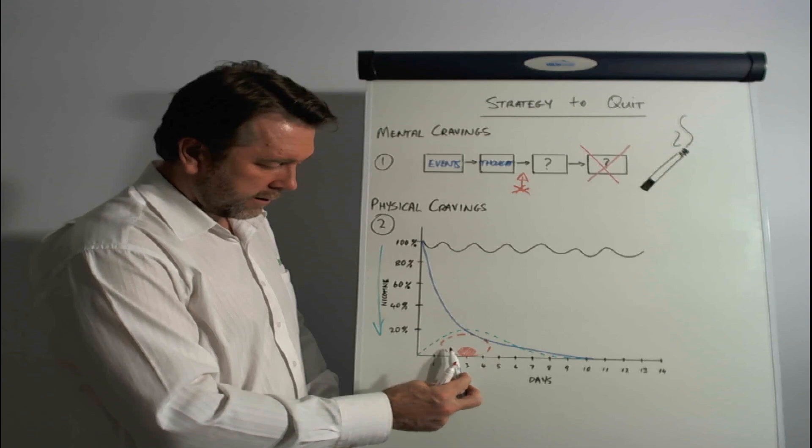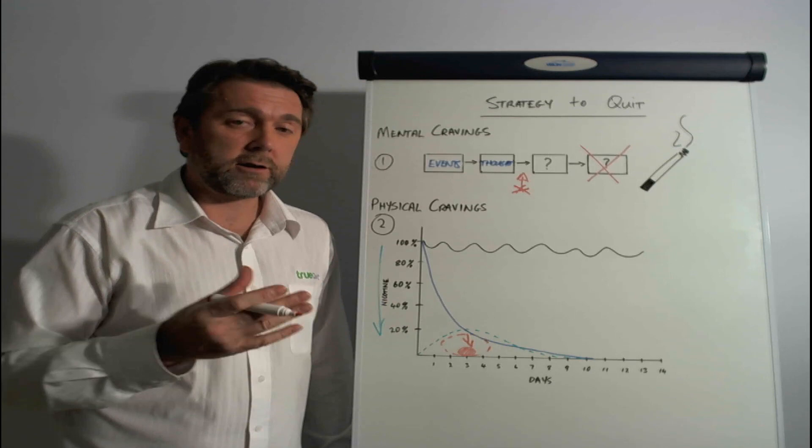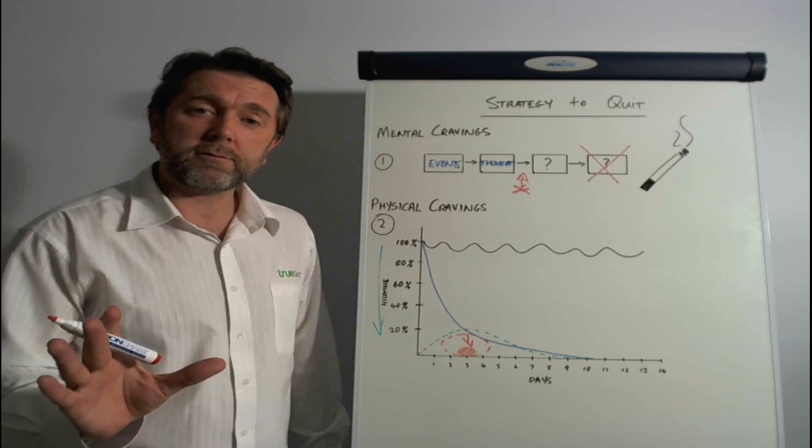Now, what would occur is you get these physical cravings around day two, three, four, five. Now, our strategy is to actually reduce these cravings down to either zero or a level where you don't need to use willpower, it's just minor sensations that are very short-lived, by giving you a treatment that actually achieves that.